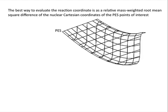The best way to evaluate a reaction coordinate is as a relative mass-weighted root-mean-square difference of the nuclear Cartesian coordinates on the potential energy surface of interest.